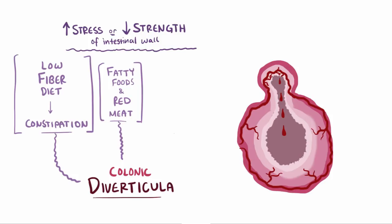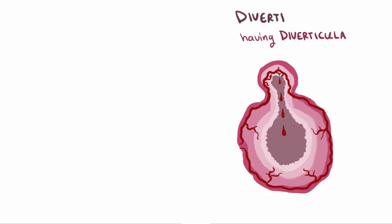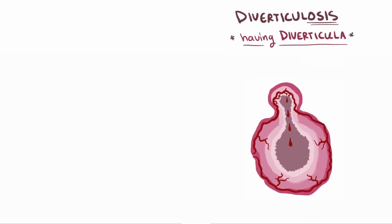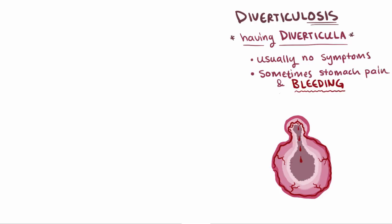There are also genetic causes of diverticula, like Marfan syndrome and Ehlers-Danlos, which are genetic disorders that affect connective tissue. Without strong connective tissue supporting and strengthening the colon wall, diverticula can begin to form. Having diverticula in the colon is called diverticulosis, and most of the time people won't even know that they have it because they don't have any symptoms. Sometimes people with diverticulosis have vague stomach pain, and occasionally the diverticula might bleed, but diverticulosis is often discovered through a colonoscopy or CT scan done for another reason entirely.